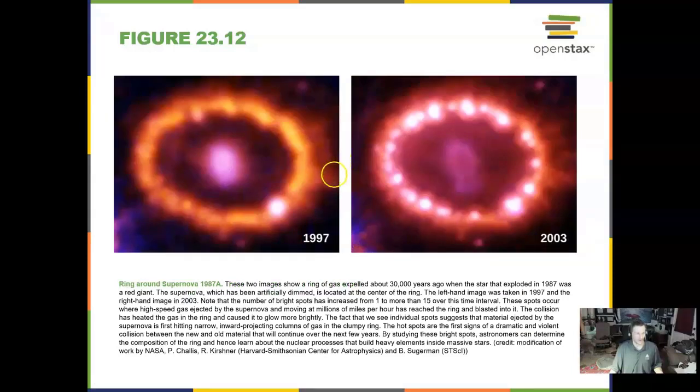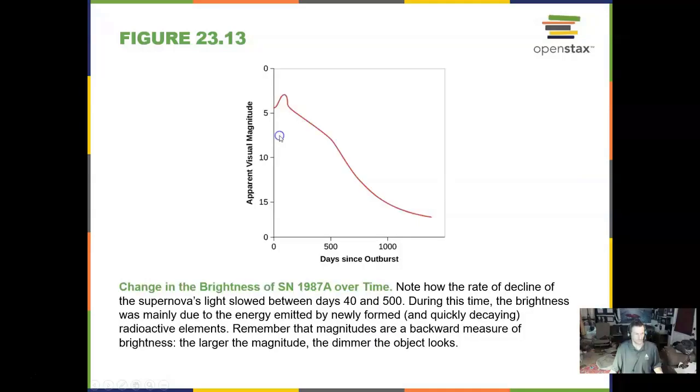There is a ring around this supernova that went off in 1987 in the Southern Hemisphere. Now, over time, a supernova will decrease in its brightness.